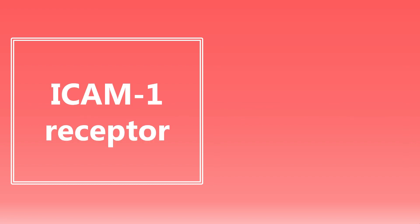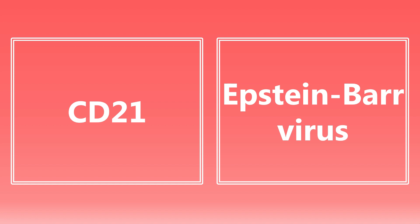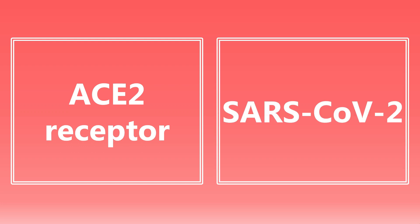We're going to get into a couple of different receptors. You want to make the association between the receptor and the microbe or virus. The first one: ICAM-1 receptor — this is associated with rhinovirus, which is how rhinovirus binds and gets into cells. Next: CD21 — this is Epstein-Barr virus; you need to know the association between CD21 and Epstein-Barr virus. After that, the ACE2 receptor — this is the SARS-CoV-2 virus, the coronavirus causing the global pandemic, which binds the ACE2 receptor to invade cells.